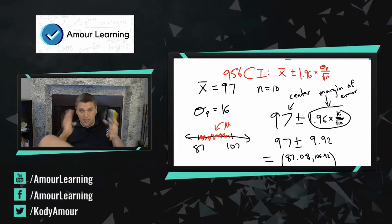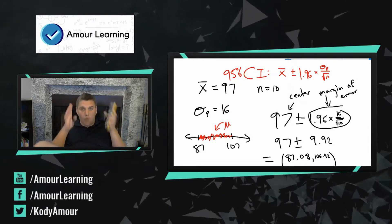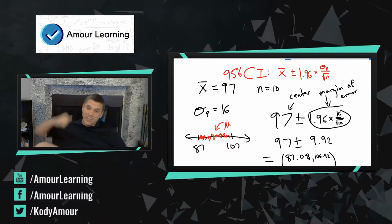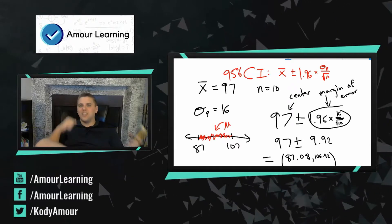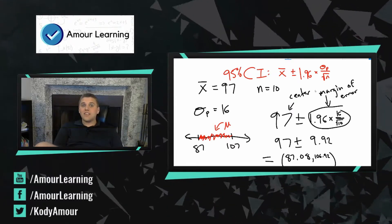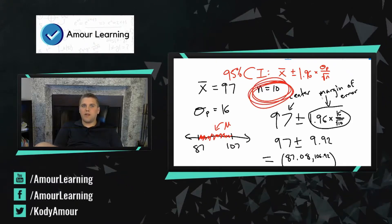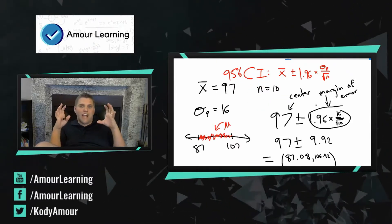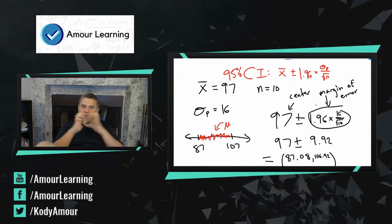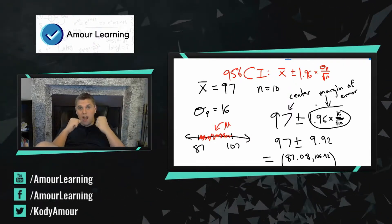Now I have created a confidence interval. On a number line with 87 and 107 as my boundaries, I'm making the claim with 95% accuracy that the actual true average is somewhere in here. And it is — the average IQ is 100, which is between 87 and 107, so I captured the average. Now as my sample size gets bigger and bigger, my margin of error gets smaller and smaller, and I'll be able to capture the average with more accuracy.